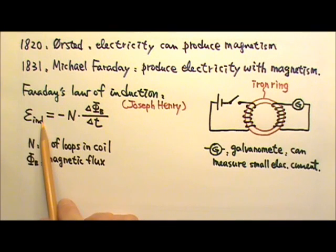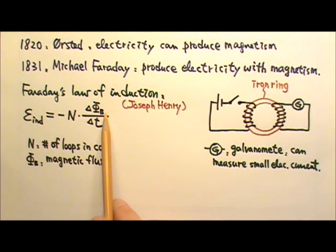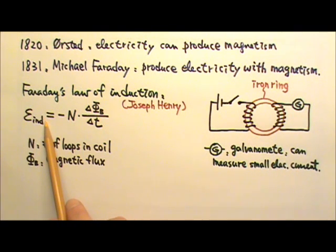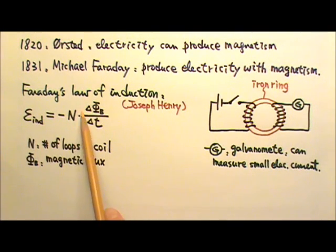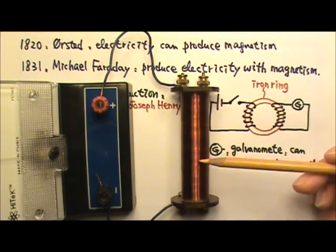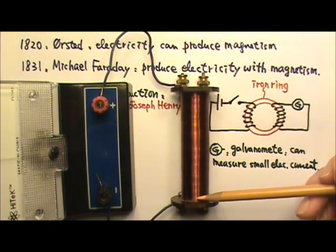To produce an induced EMF, this magnetic flux has to change. The higher its rate of change, the higher the induced EMF, and therefore the higher the induced current. Also, the more loops we have in a wire coil, the bigger the induced EMF. That's why we used the solenoid with lots of wire turns for our demonstration.